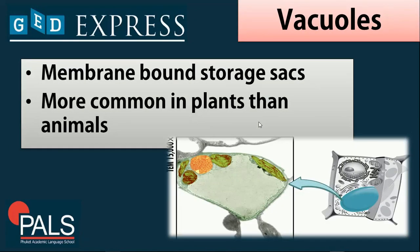Next we have vacuoles. Vacuoles are membrane-bound storage sacs. These are more common in plants because this is where water and food are stored. Animal cells also have vacuoles, but comparing them to plant cells, plant cell vacuoles are larger than those in animal cells.